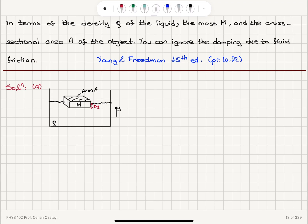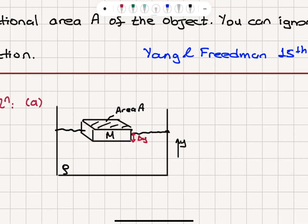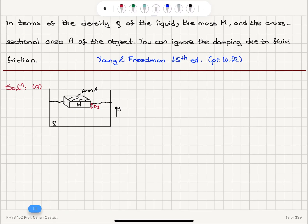We have a floating object with uniform cross-sectional area A, mass M, in a liquid with density rho, and a distance delta-y from the surface of the liquid to the bottom of the object. Drawing a free body diagram, I see two forces: the weight of the object, Mg, pulling it down, and the buoyant force due to the liquid pointing up.